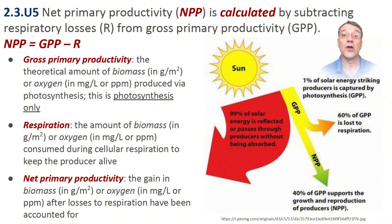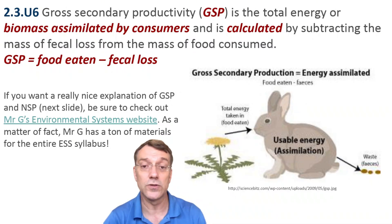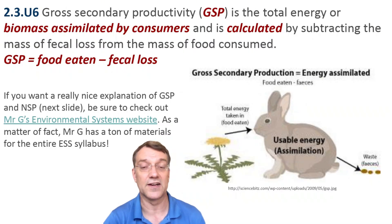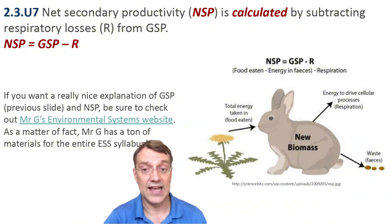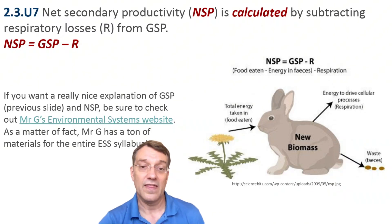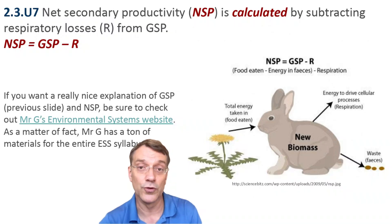NPP is the actual growth that becomes available to the other organisms that eat those producers. Similarly, gross secondary productivity, abbreviated GSP, is calculated by subtracting fecal loss from food eaten by consumers — it represents the total energy assimilated by consumers. Mr. G's ESS website has some excellent resources explaining these concepts. Net secondary productivity, abbreviated NSP, equals GSP minus respiratory losses. This represents new biomass created at consumer levels — the actual growth of consumer populations after accounting for energy used in respiration, just like productivity at primary levels except for consumers instead of producers.